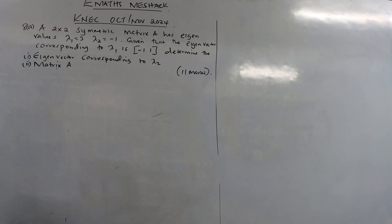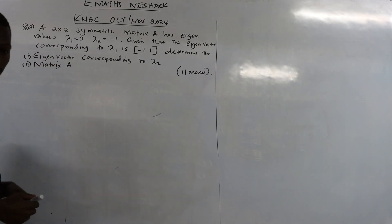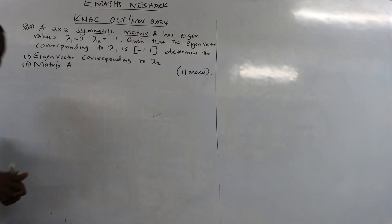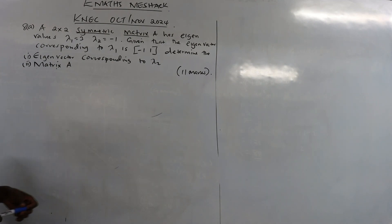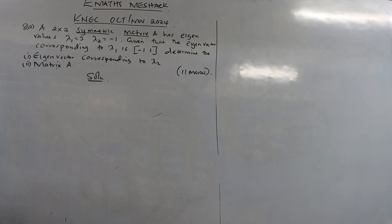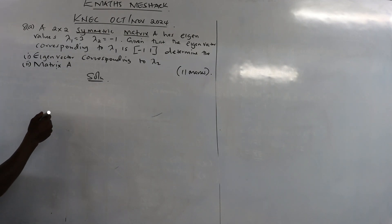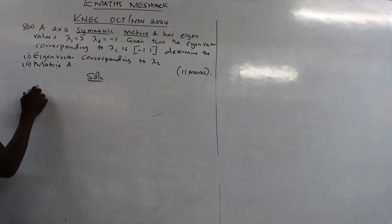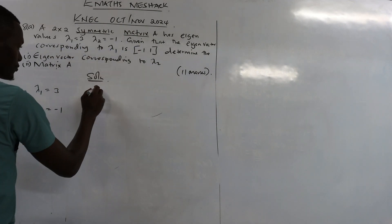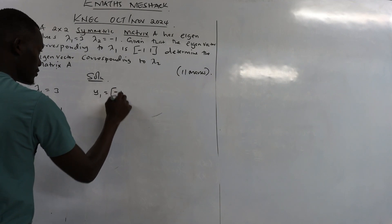There are two things we need to note as we start working this question. One: it is a 2x2 matrix. Two: it is symmetric. That statement is very important and we shall see what it means as we work through. So now for the solution — we have λ1 = 3 and λ2 = -1, and the eigenvector corresponding to λ1 is y1 = (-1, 1).